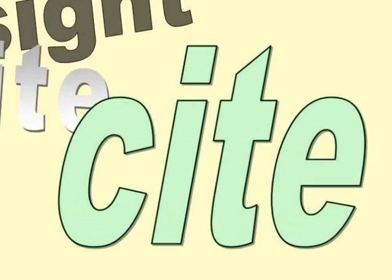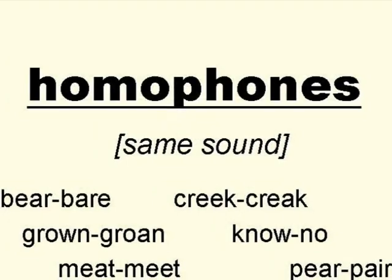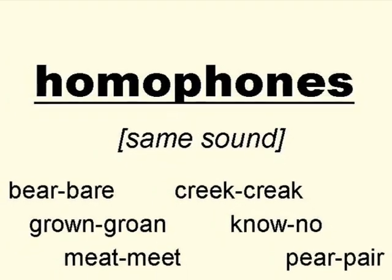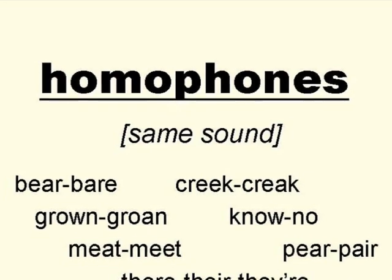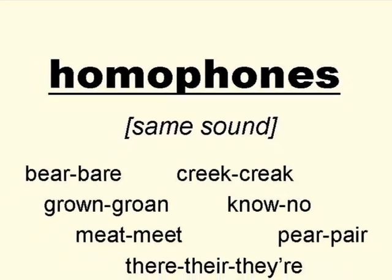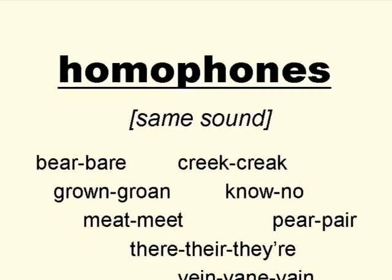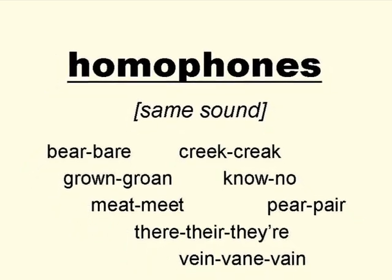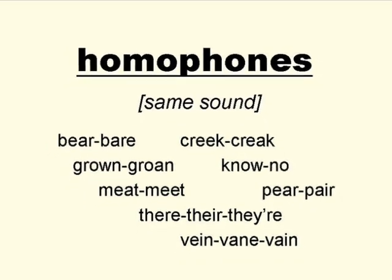This may be a new word for you. These words — cite, cite, and cite — are homophones. That is, they have the same sound, but different spellings and meanings. Here are some other homophones you may have heard: bear, creak, groan, know, meet, pear, their, and vein.